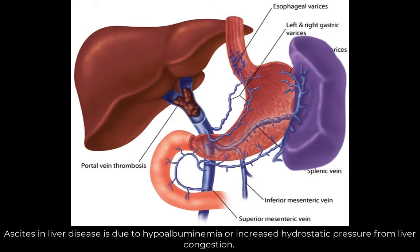Ascites does not develop in portal vein thrombosis. Ascites happens in liver disease when there is less protein synthesis, causing hypoalbuminemia and decreased oncotic pressure, or in hepatic vein thrombosis or heart failure when there is increased hydrostatic pressure. Since these are not happening here, ascites does not occur.